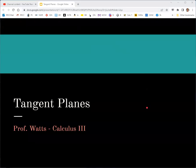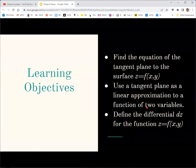In this video, we're going to take a look at tangent planes. This lecture goes along with section 4.4 in the OpenStax textbook Calculus Volume 3. We'll see how to find the equation of a tangent plane for a function of two variables, how to use that tangent plane as a linear approximation, which leads to the idea of the differential dz for function z.